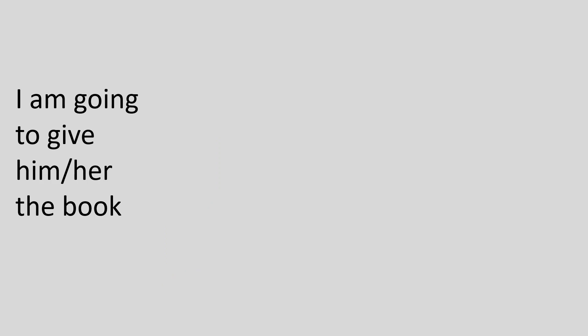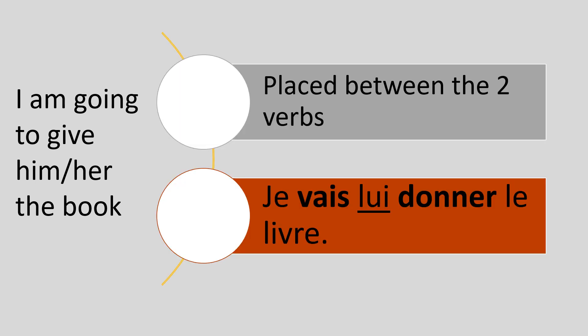The pronoun is placed before the verb. But what happens if we have two verbs, like 'I'm going to give him the book'? We have 'I'm going' as the first verb and 'to give' as the second. The pronoun is placed between the two verbs: je vais lui donner le livre.